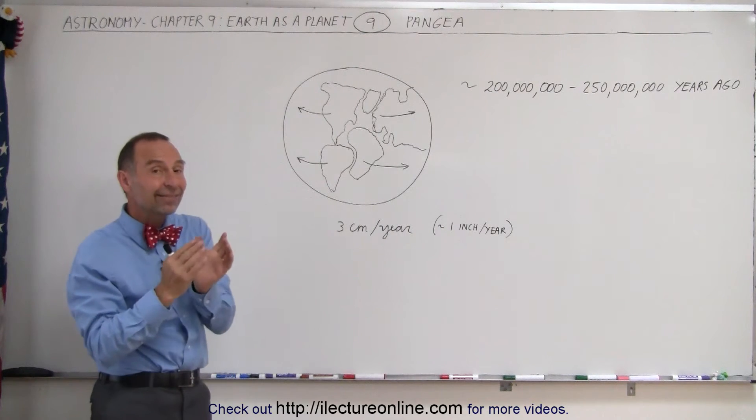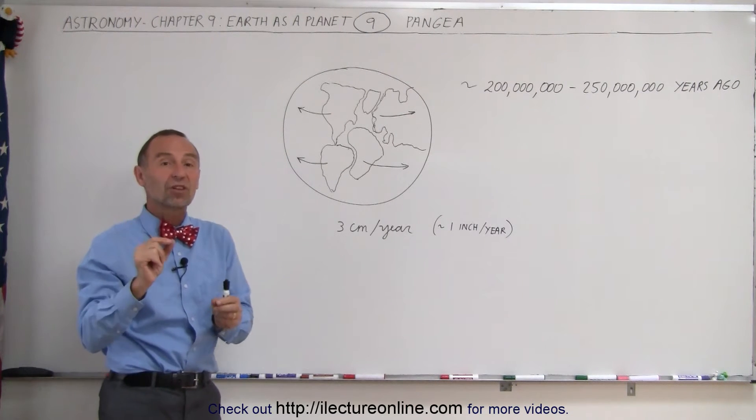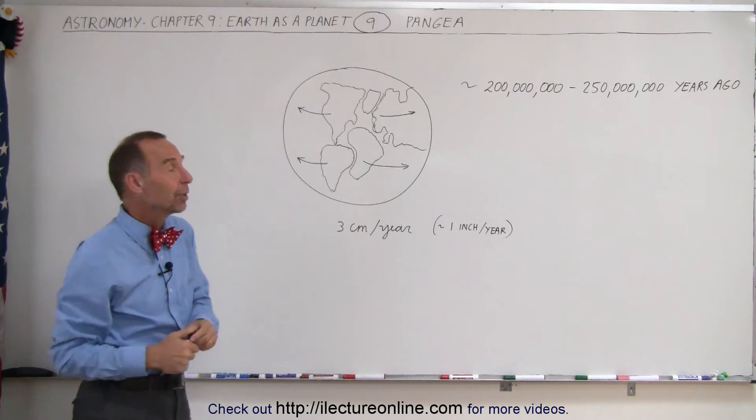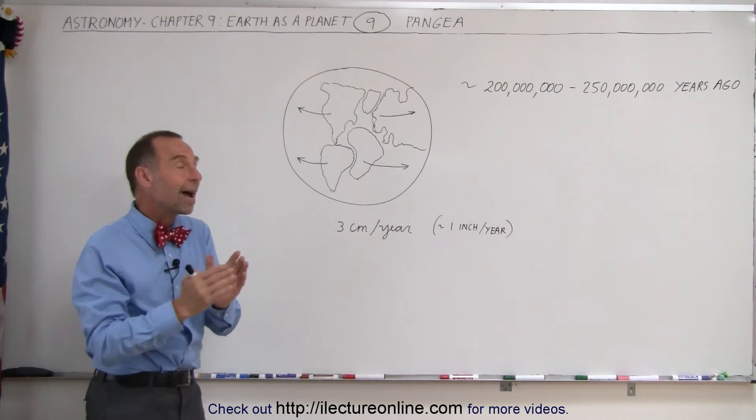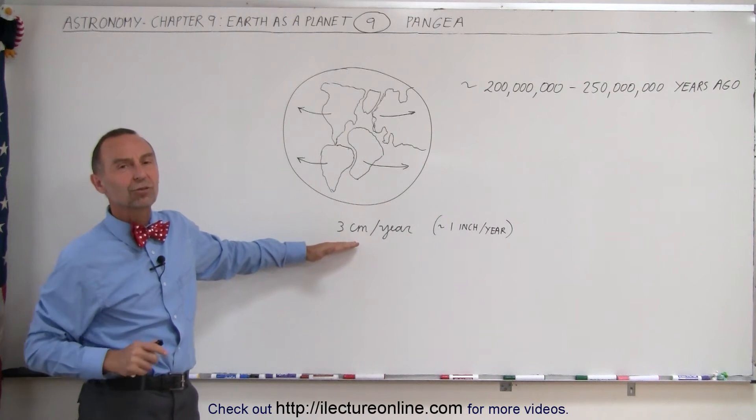And since then, over the last 200-250 million years, and even then that's only a small percentage of the total lifespan of the entire Earth which is about four and a half billion years old, during that time the continents have drifted apart at a rate of about three centimeters per year.